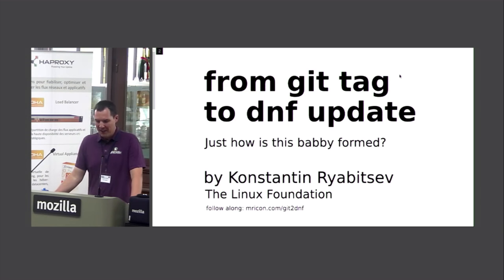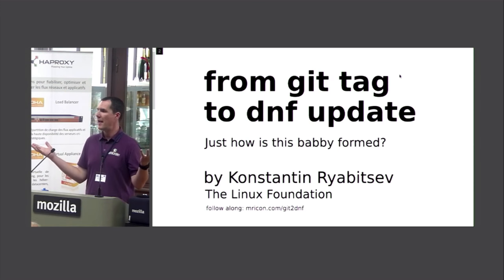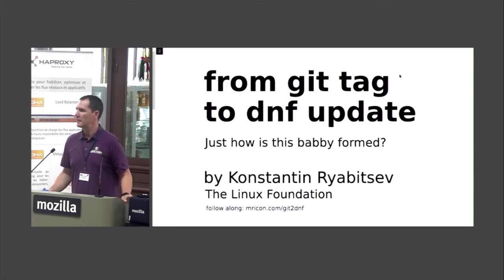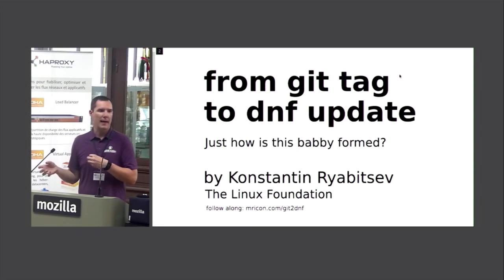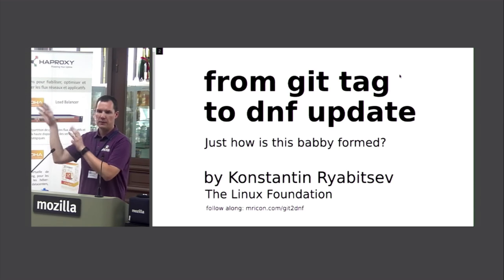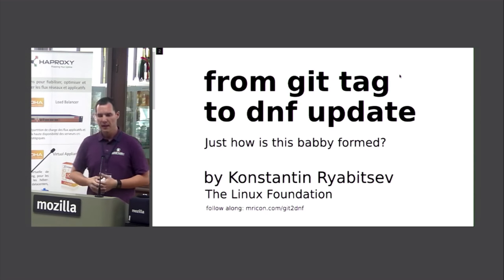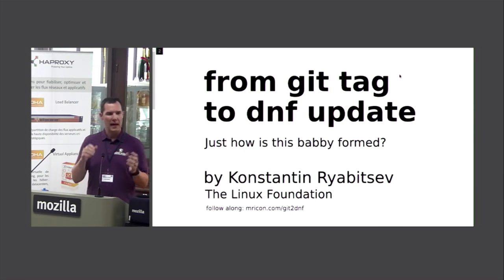We're going to talk about going from git tag to DNF update. A lot of kernel developers ask me: how exactly does the kernel get released? When Linus types git tag, what happens after that? How does it get from Linus's laptop all the way to kernel.org and then the announcement that here is the new kernel released? We'll go through the entire process — git tag to DNF update — though we won't get into the DNF update part today.